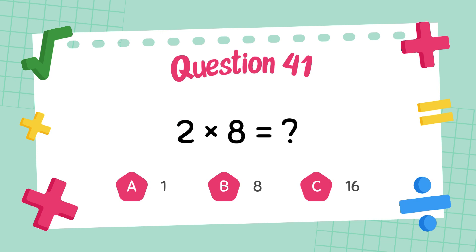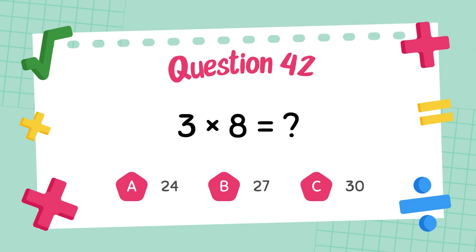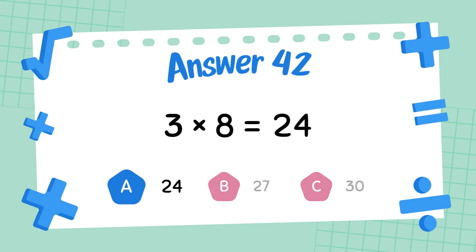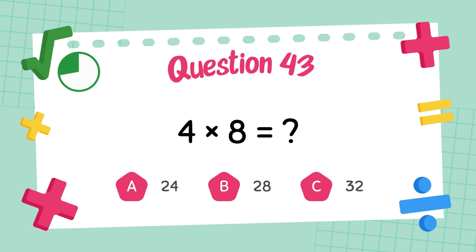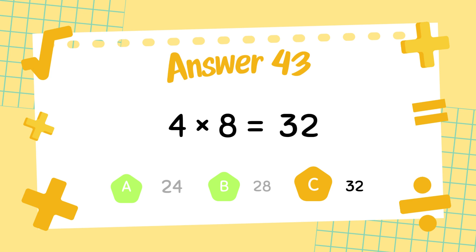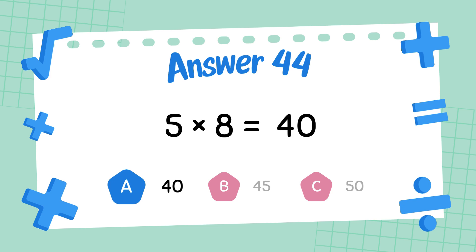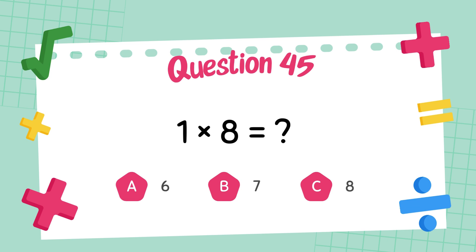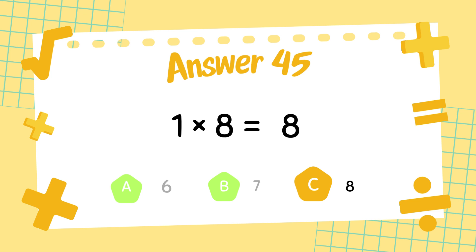What is 2 times 8? The answer is 16. What is 3 times 8? The answer is 24. What is 4 times 8? The answer is 32. What is 5 times 8? The answer is 40. What is 1 times 8? The answer is 8.